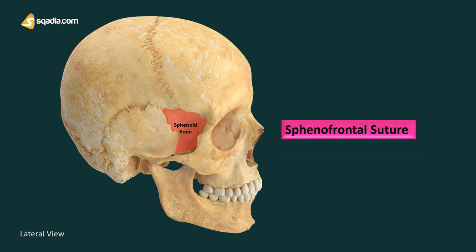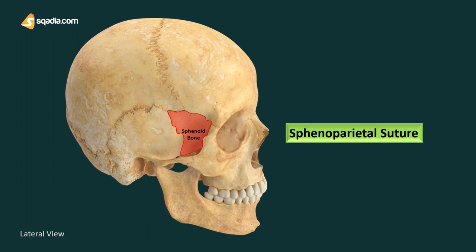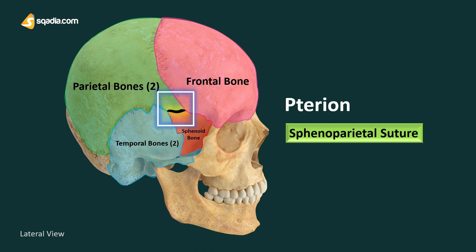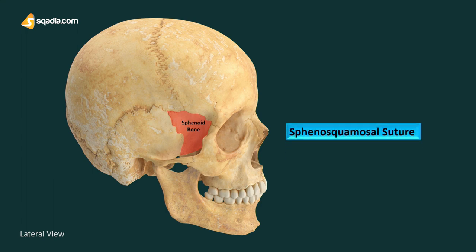The sphenofrontal suture is formed by the articulation of the sphenoid with the frontal bone, meeting at the inferior posterior edges of the frontal bone. The sphenoparietal suture is the articulation of the sphenoid with the parietal bone. A key characteristic of this suture is pterion — the region where four bones join: frontal, parietal, temporal, and sphenoid — located on the side of the skull behind the temple. The sphenosquamous suture is formed bilaterally with the squamous part of the temporal bone.